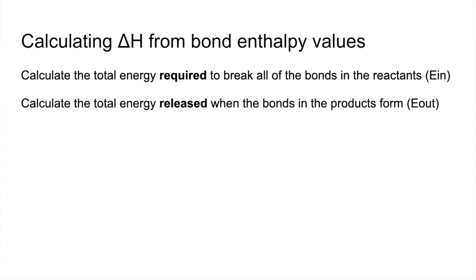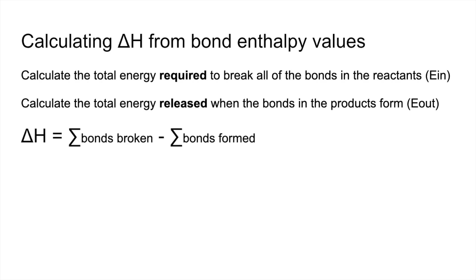You also calculate the total energy released when the bonds in the product form — that's E out. So the enthalpy change is the sum of the energy to break all the bonds in the reactant minus the sum of the energy produced when the bonds in the product are formed. More simply: delta H equals energy in minus energy out.